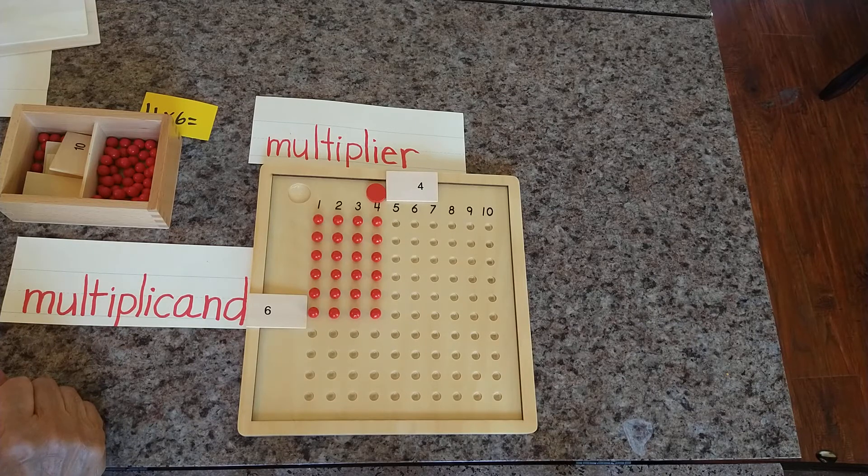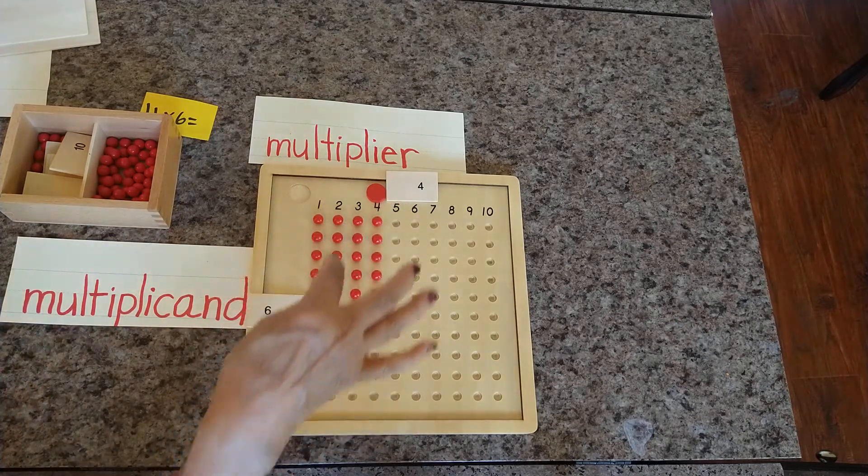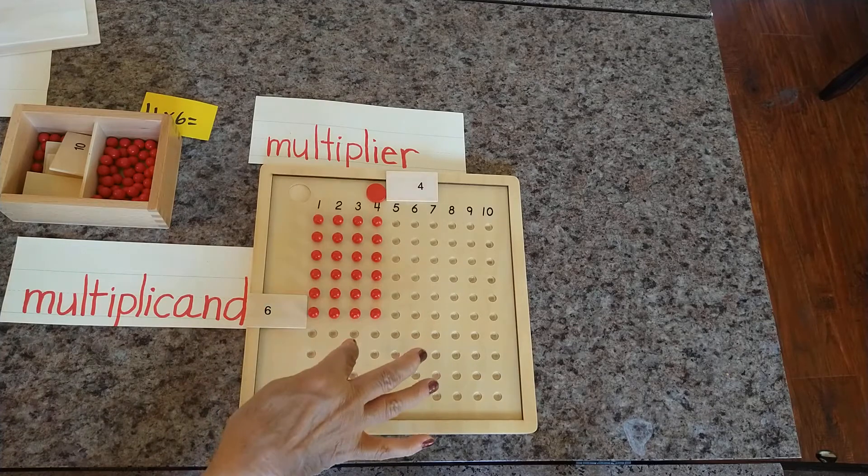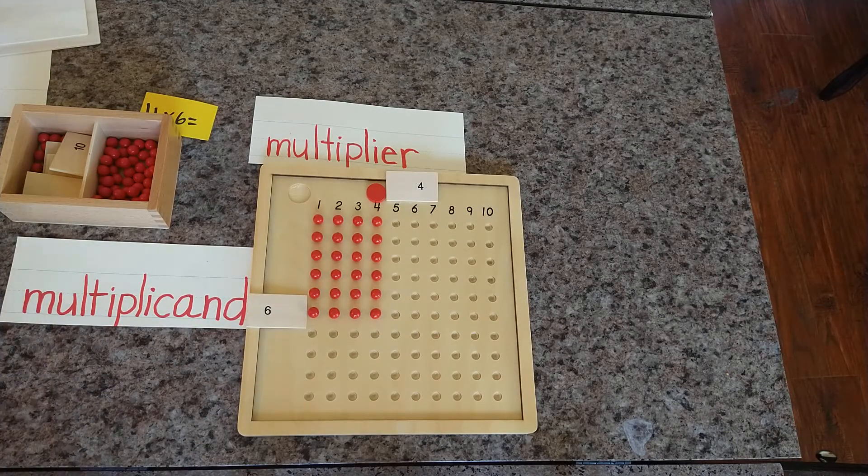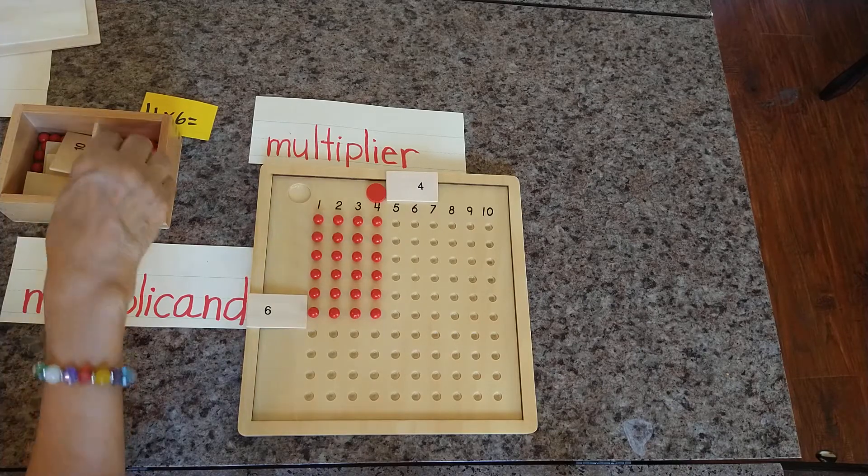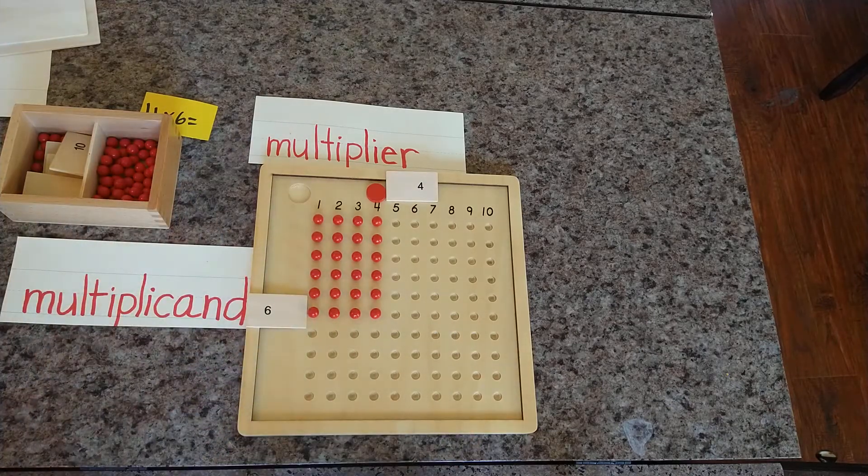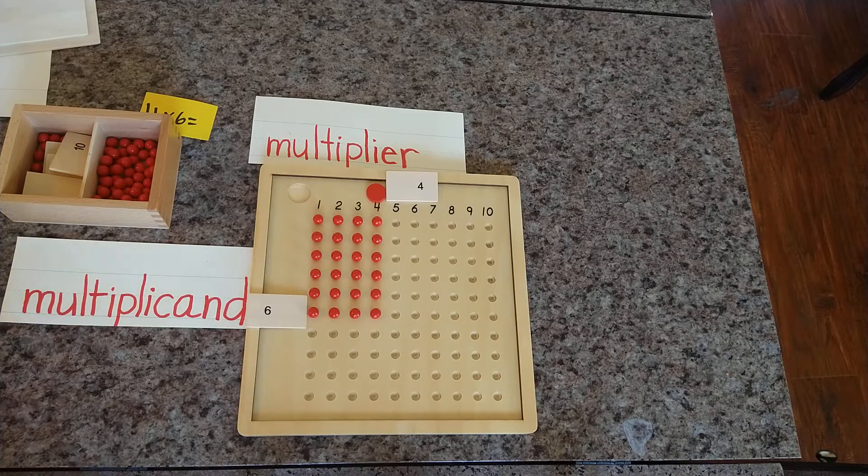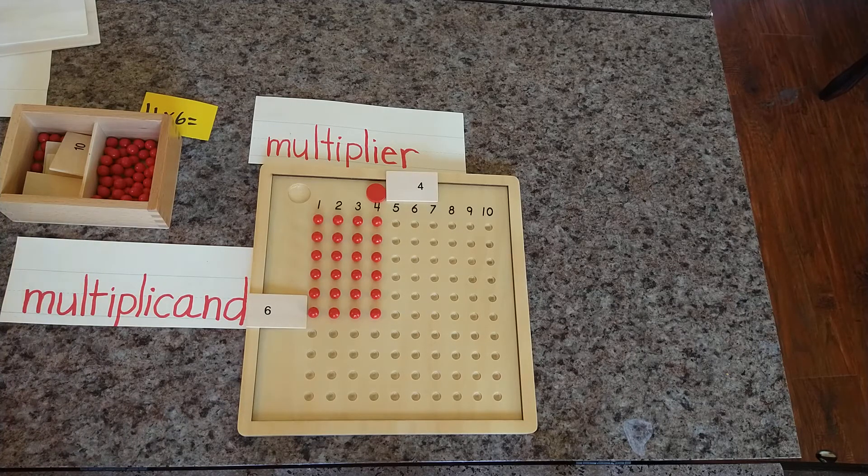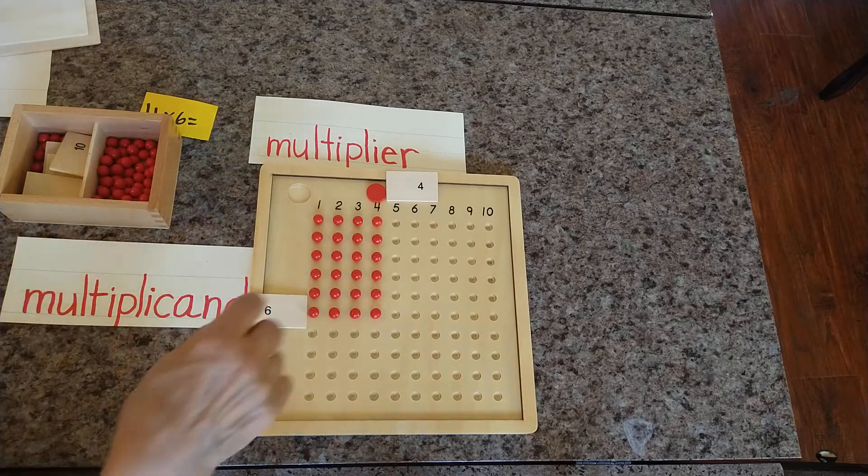If you know the multiplication facts, you could count like that: 6, 12, 18, 24. If you don't know the multiplication facts, then you could count all the beads and then you could find the answer. The answer is called product. So let's count together.